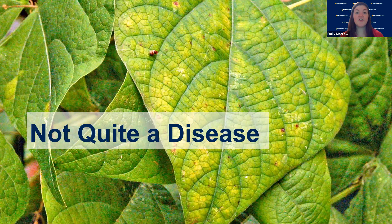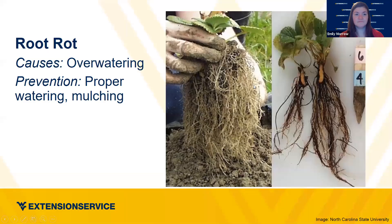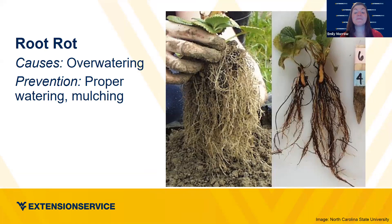There are a few things that look like a disease but aren't quite a disease. For example, root rot — any plant can be susceptible to it, and the cause is simply overwatering: too much moisture in the soil, flooding the roots. With too much water, plants will drop and die. Here is an example of strawberries with good root development in proper soil moisture versus one that's been watered too much.